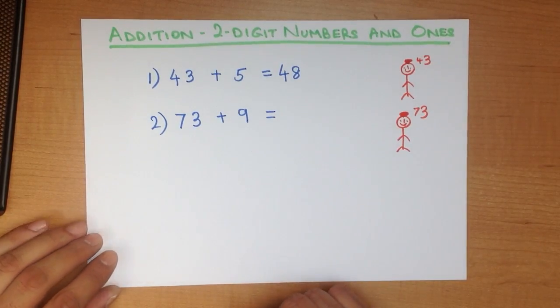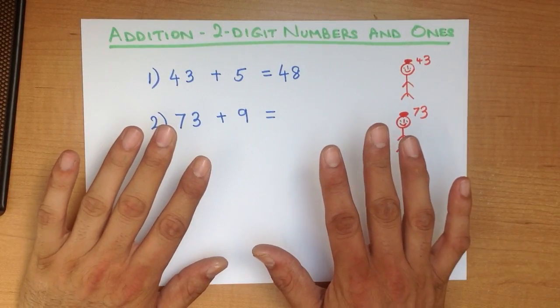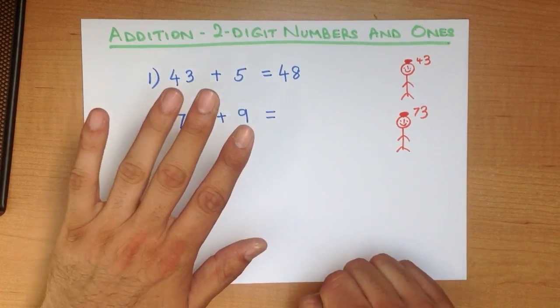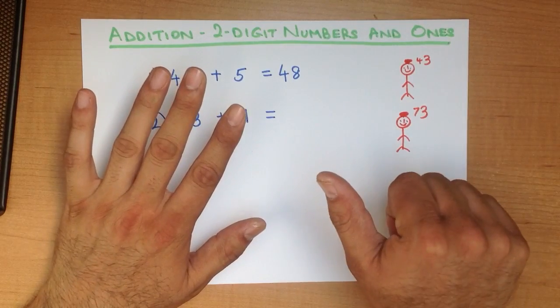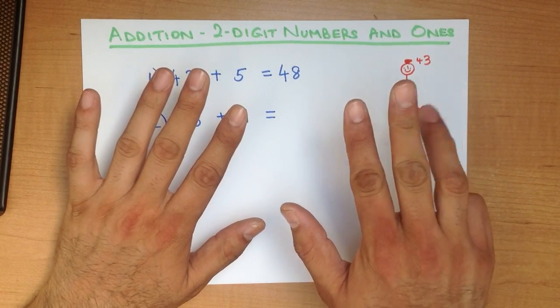And the smaller number is 9. So we need to get 9 fingers and thumbs. Well, we know this is 5. 1, 2, 3, 4, 5. 6, 7, 8, 9.